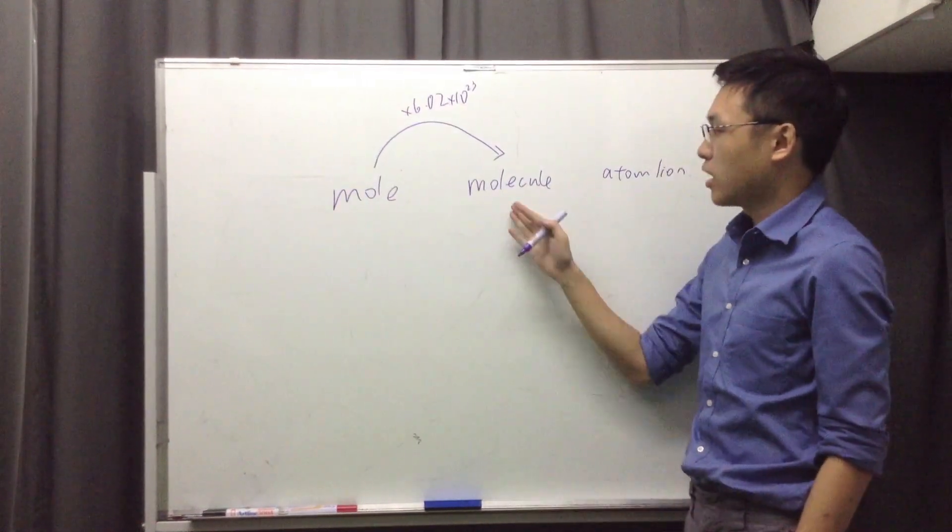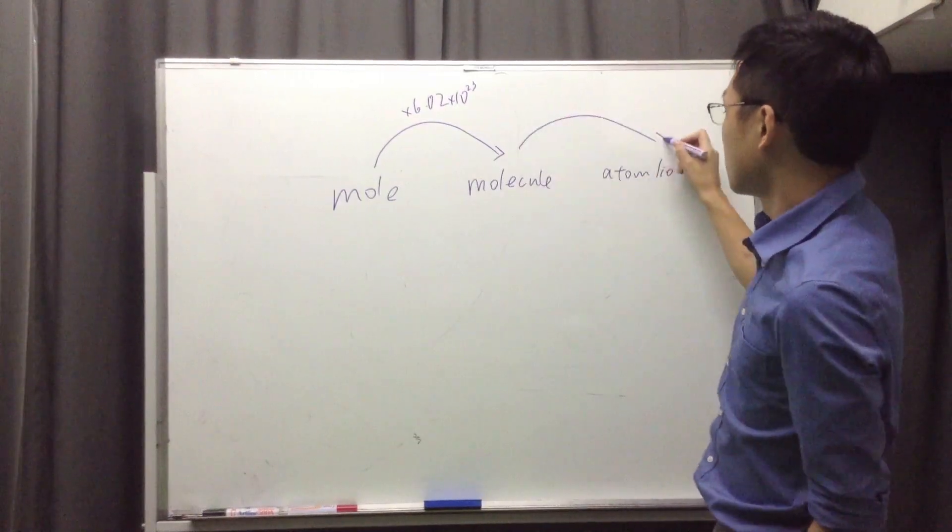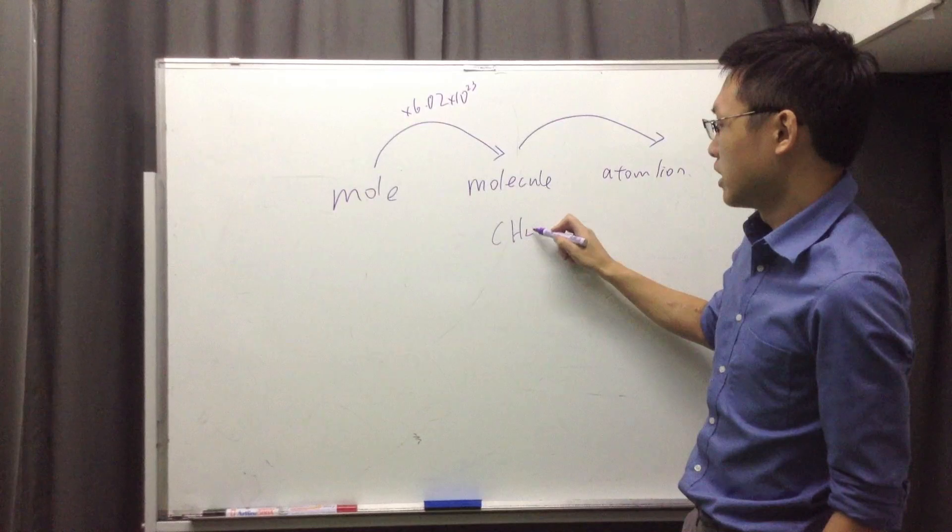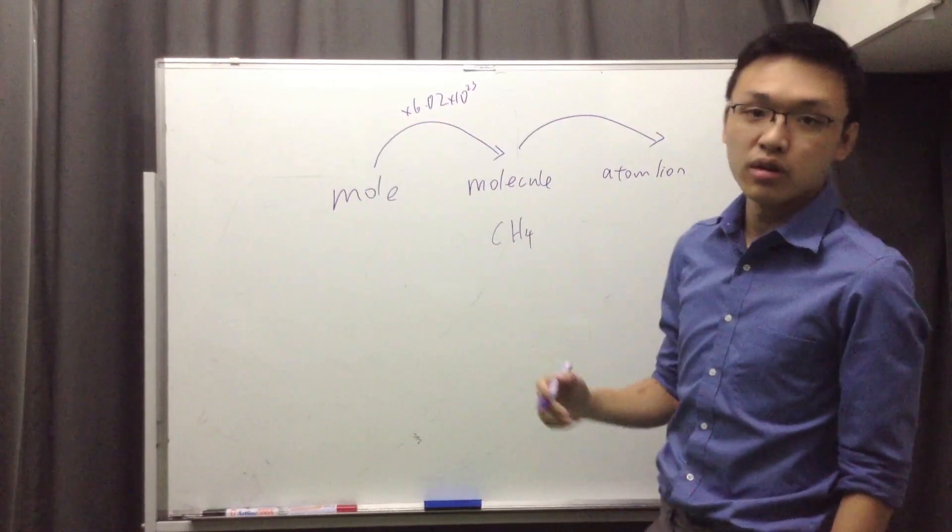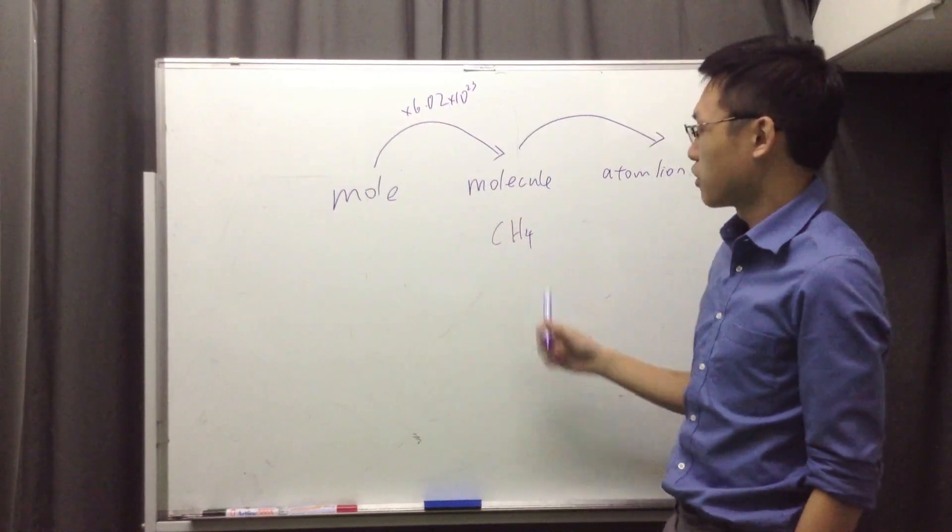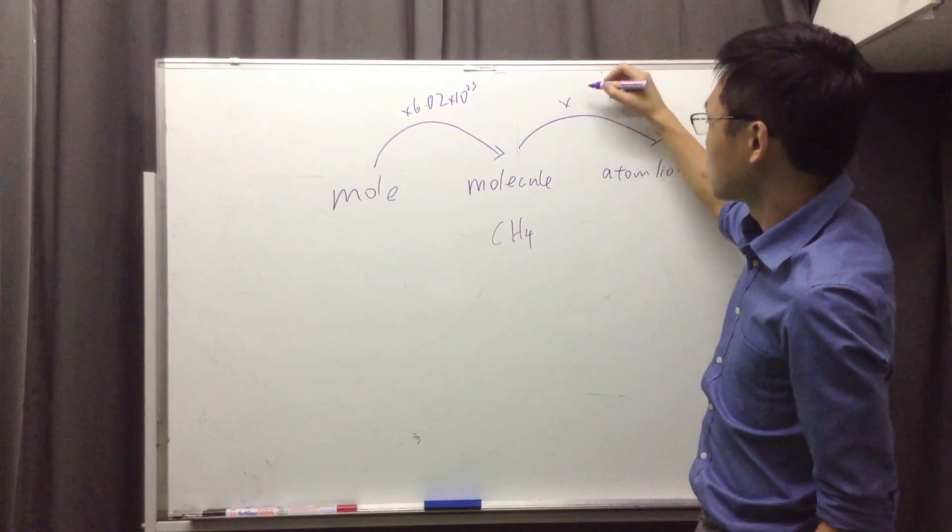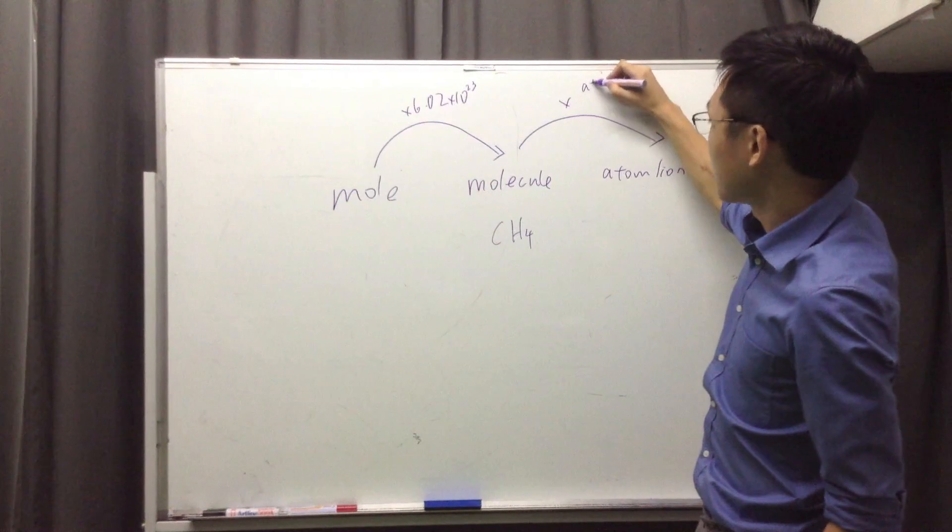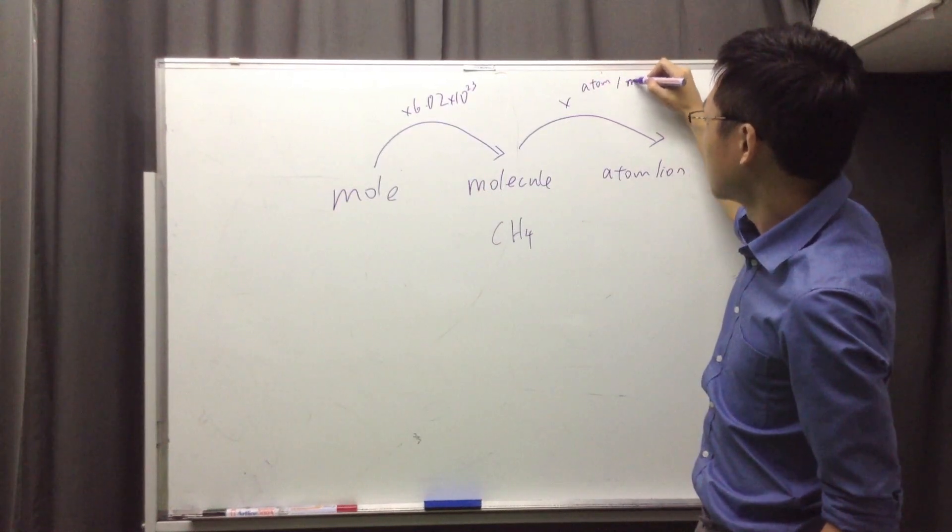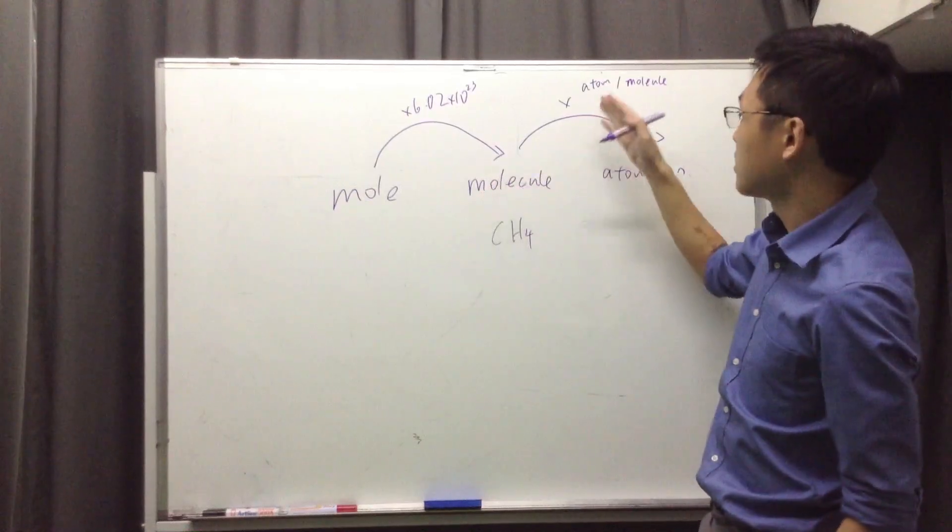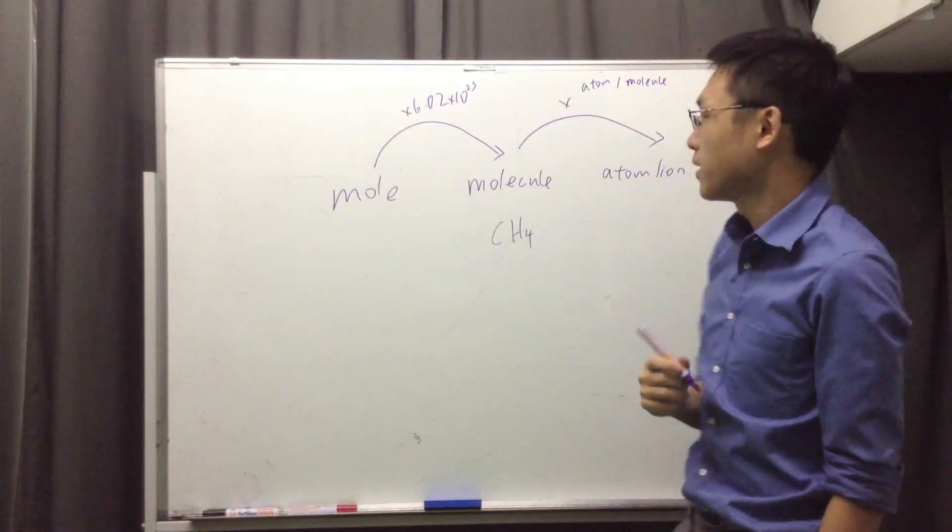So if you want to go from molecule to atoms, what do you do? Let's say, if I ask how many atoms are there in one molecule of CH4, what do you do? In each molecule of CH4, there are five atoms. So basically what you should do is multiply by the number of atoms per molecule. You multiply the number of molecules by the number of atoms per molecule.